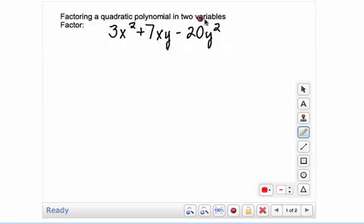When you're factoring a quadratic polynomial in two variables and the leading coefficient is greater than 1, this is just like what you've done before, but if the y and the y squared wasn't here, you had 3x squared plus 7y minus 20, you're going to factor this the same way.